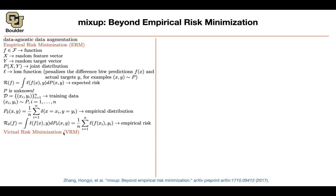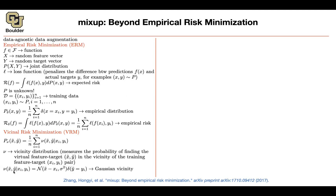What is vicinal risk minimization? You want to write a distribution over your pairs of inputs x and y. You look at your data, and wherever you have a data point, in that neighborhood you try to smooth out this empirical distribution. The empirical distribution was not smooth — just Dirac delta functions, like pins coming out of the plane. Now you're trying to smooth things out.